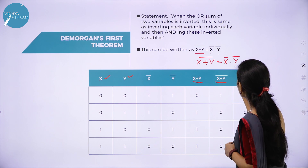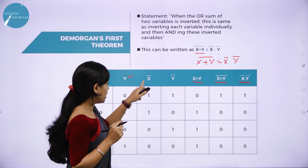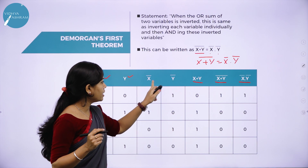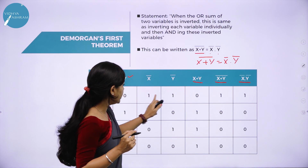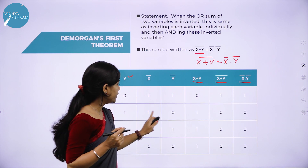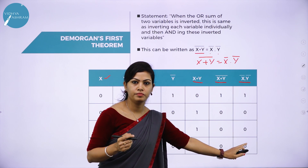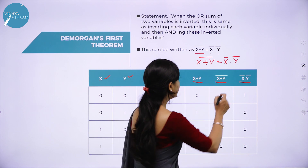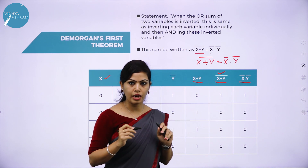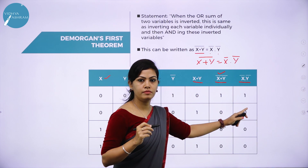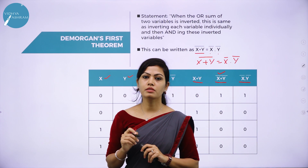Last column: x̄·ȳ — multiply x̄ and ȳ columns: 1×1=1, 1×0=0, 0×1=0, 0×0=0. Observing columns (x + y)̄ and x̄·ȳ: both are identical (1, 0, 0, 0). Hence De Morgan's first theorem is proved.